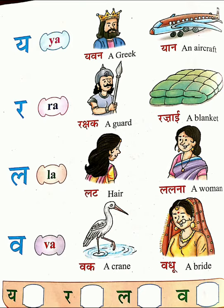Letter RA, R-A. 'Rakshak', R-A-K-S-H-A-K — a guard, G-U-A-R-D. Then 'rajai', R-A-J-A-I — a blanket, B-L-A-N-K-E-T.